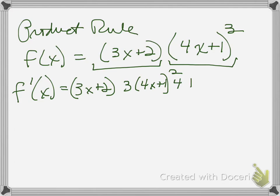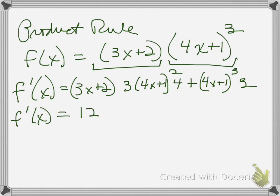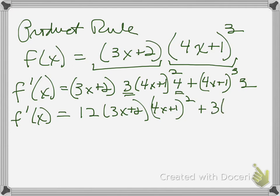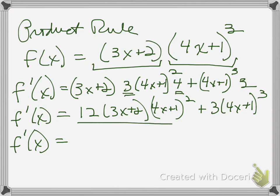So I did left times d-right, plus right — (4x plus 1) cubed — times d-left, which is just 3. Let's clean this up. f prime of x equals — I'm going to bring a 12 out — I have (3x plus 2) times (4x plus 1) squared, plus 3 times (4x plus 1) cubed. At this point I would do greatest common factor factoring to put this in its best form. Looking at the two terms, what do they have in common? They share 3 times (4x plus 1) squared.